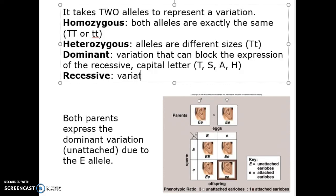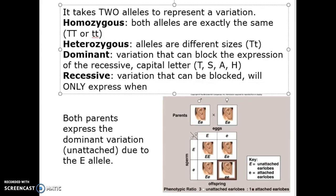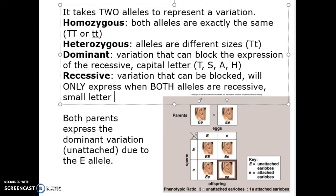Now recessive is going to be the variation that can be blocked. It will only express when both alleles are recessive. And we use small letters to represent recessive alleles. So little t, little s, little a, little h, et cetera. That is how you express a recessive variation. Two little letters. Two little t's, two little a's, two little et cetera's. There's your recessive variations.